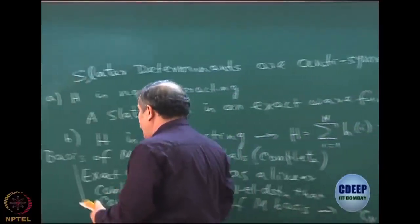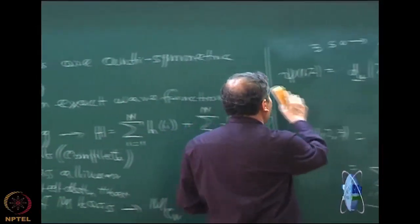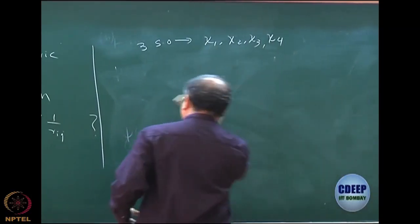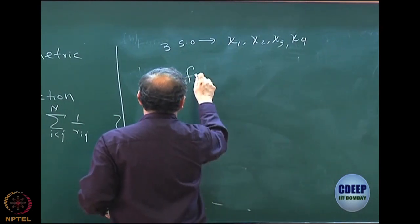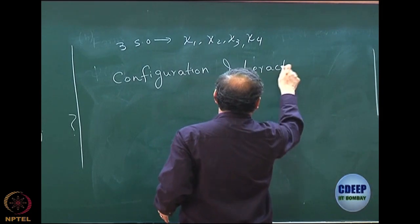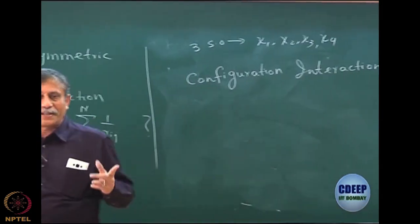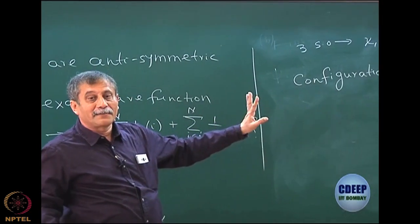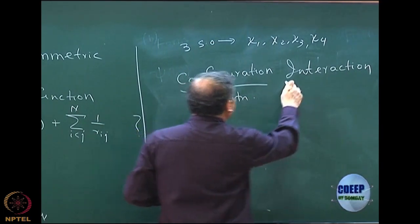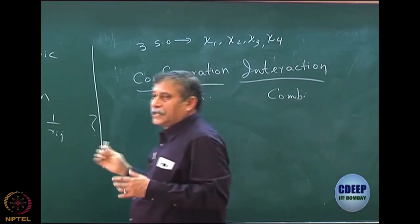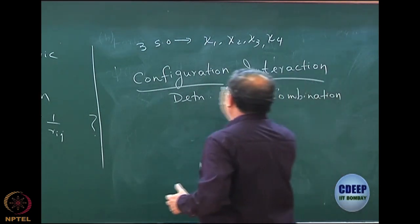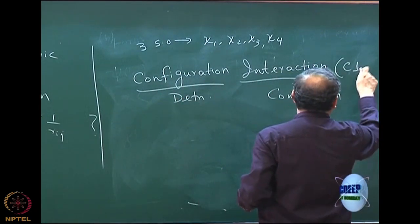This particular way of dealing with the interacting problem is known as configuration interaction, or CI. This is done much after Hartree-Fock normally. You first do Hartree-Fock, which involves only one determinant, and then you go to this. Configuration means determinant, and interaction means combination. That is why it is called a linear combination of determinants, or linear combination of configurations — this is the CI method.